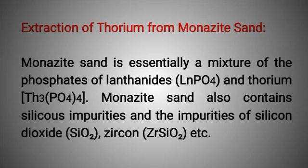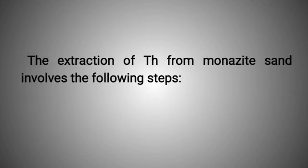Extraction of thorium from monazite sand. Monazite sand is essentially a mixture of the phosphates of lanthanides and thorium. Monazite sand also contains siliceous impurities and the impurities of silicon dioxide, zircon, etc. The extraction of thorium from monazite sand involves the following steps.